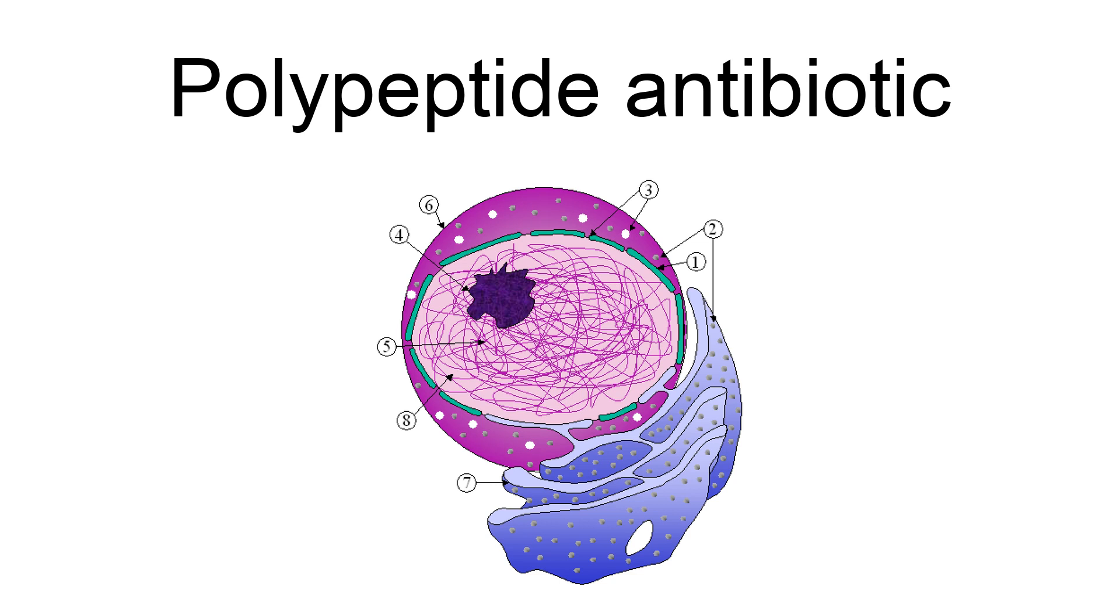Actinomycin D is believed to produce its cytotoxic effects by binding DNA and inhibiting RNA synthesis. The mechanism of action of other polypeptide antibiotics is thought to be directed to bacterial membranes, but the details are largely unknown.